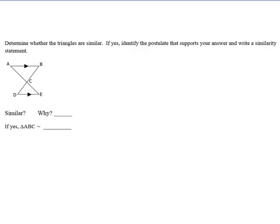Next problem, determine whether the triangles are similar. If yes, identify the postulate that supports your answer and write a similarity statement. So again, identify the postulate just means is it AA, SAS, or SSS. So vertical angles, check. Parallel lines, if we remember from proving triangles congruent, that means that alternate interior angles are congruent. So yes, these two triangles would definitely be similar because of angle-angle similarity. So are they similar? Yes.